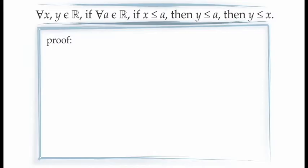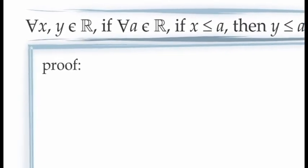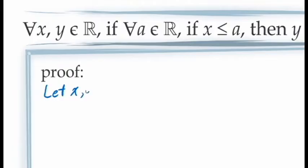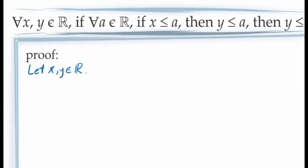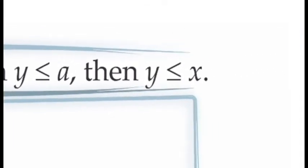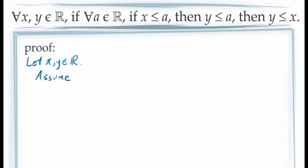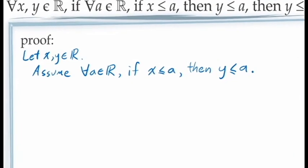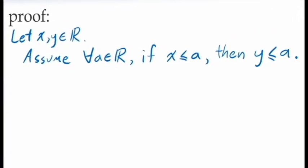Let's look at another example. We're going to prove a fairly complicated-looking statement: for all values of x and y in the real numbers, if for all values of a in the real numbers, if x ≤ a then y ≤ a, then y ≤ x. We begin by introducing arbitrary constants x and y. Using a direct proof, we assume the full antecedent: for all a in the real numbers, if x ≤ a then y ≤ a. From here, we need to demonstrate that y ≤ x. Since our assumption contains a universal quantifier, we need to use universal instantiation and choose a specific value of a.